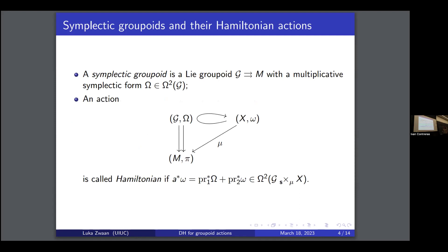There is a notion of Hamiltonian actions for symplectic groupoids, which is as follows. You want a Lie groupoid action on a symplectic manifold. You call it Hamiltonian if you have this multiplicativity condition, where 'a' is the action defined on this domain. This condition might not look like the classical Hamiltonian group action definition, but there is an infinitesimal version which really looks like a moment map condition, and which is equivalent to this in the source-connected case.